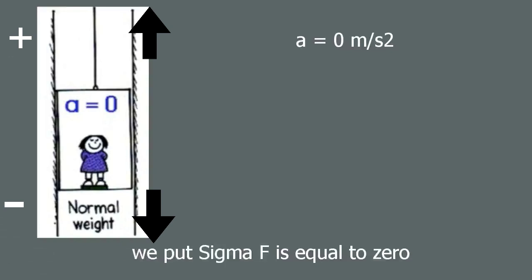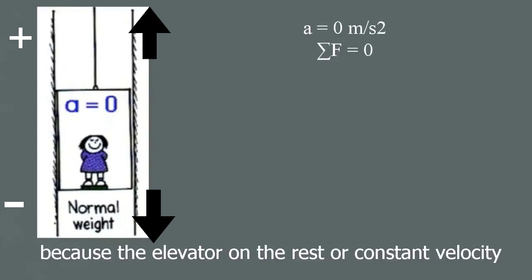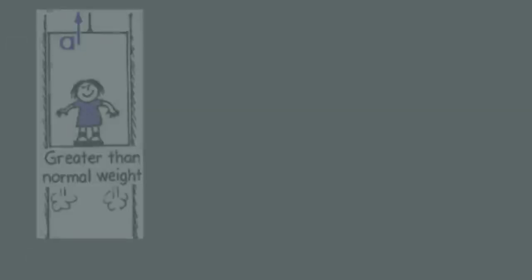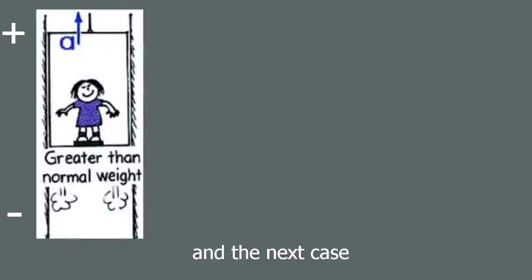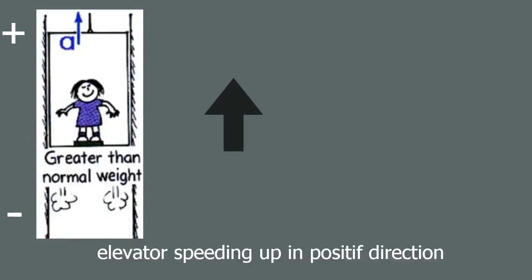Newton's force law is applied: sigma F equals zero because the elevator is at rest or constant velocity, so the normal force is equal to the weight force. In the next case, the elevator is speeding up and has acceleration.